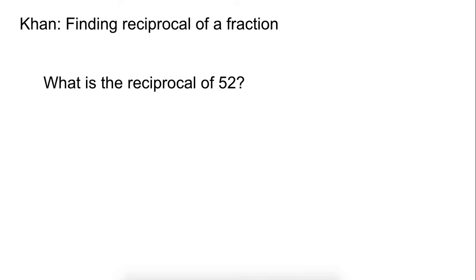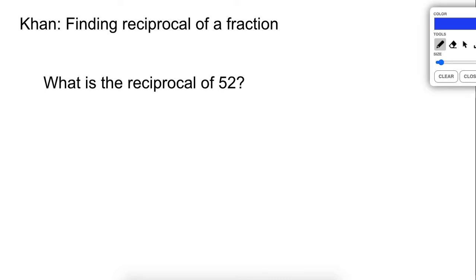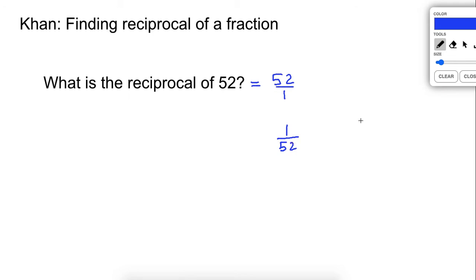Now this one — Khan Academy didn't have any like this, but I'd like to talk about it anyway. What is the reciprocal of fifty-two? In order to do this, let's make the whole number fifty-two into a fraction. We can make it a fraction by putting fifty-two over one. These are equivalent, because anything over one is just the number itself — it's like fifty-two divided by one. So the reciprocal of that would be one over fifty-two. The reciprocal of a whole number is just one over that number, and that works for any whole number, because we can put any whole number over one and then flip it.